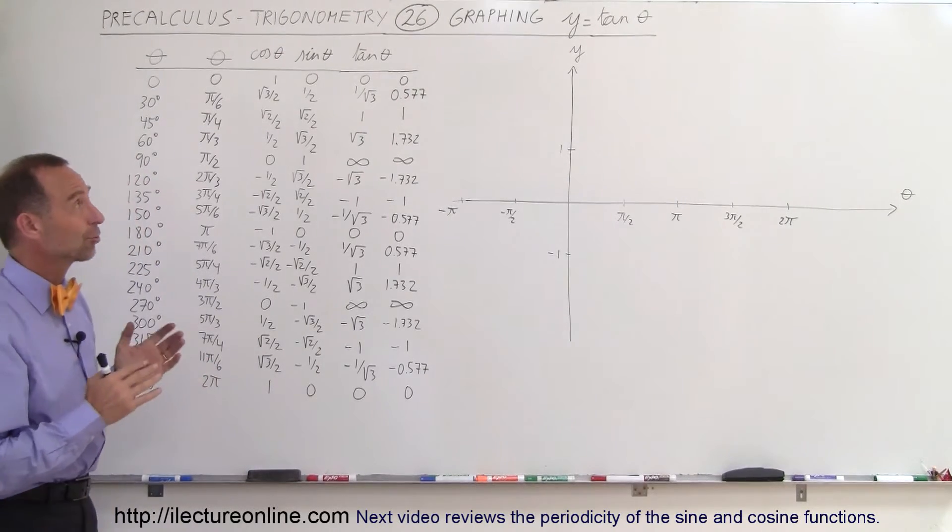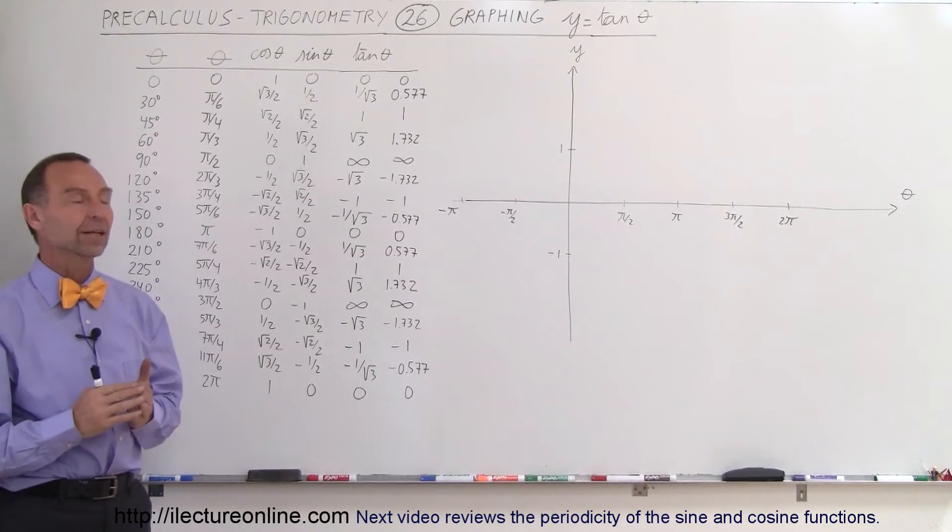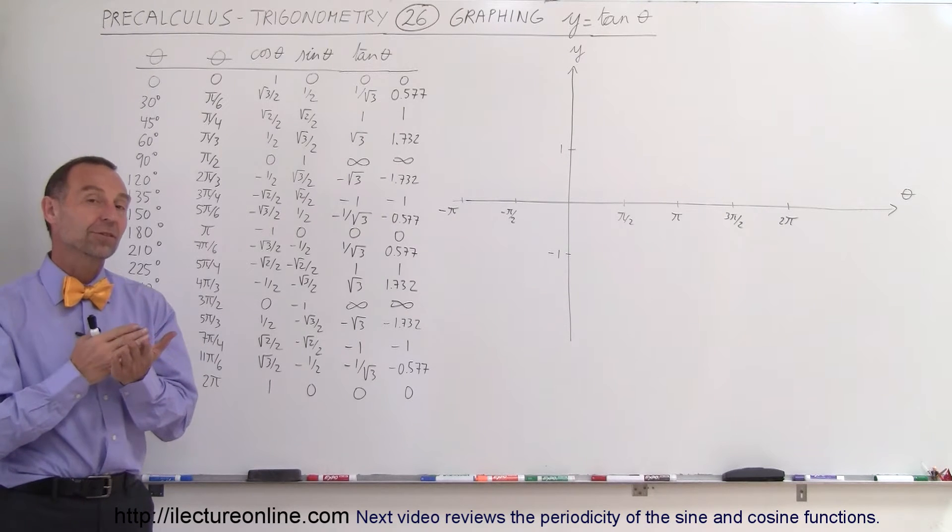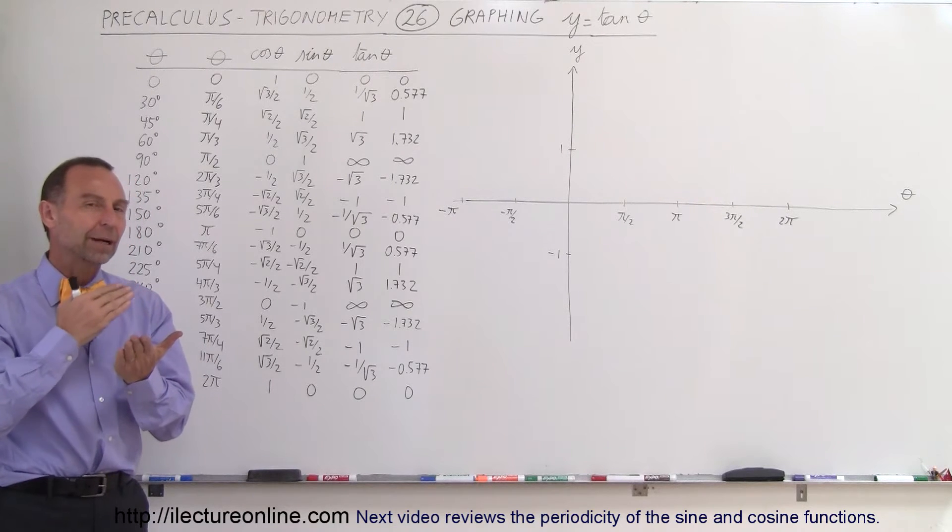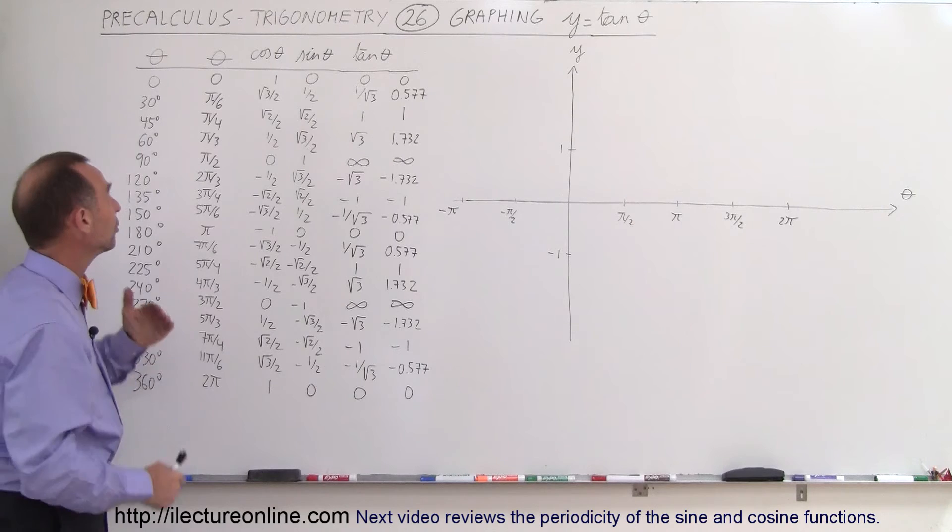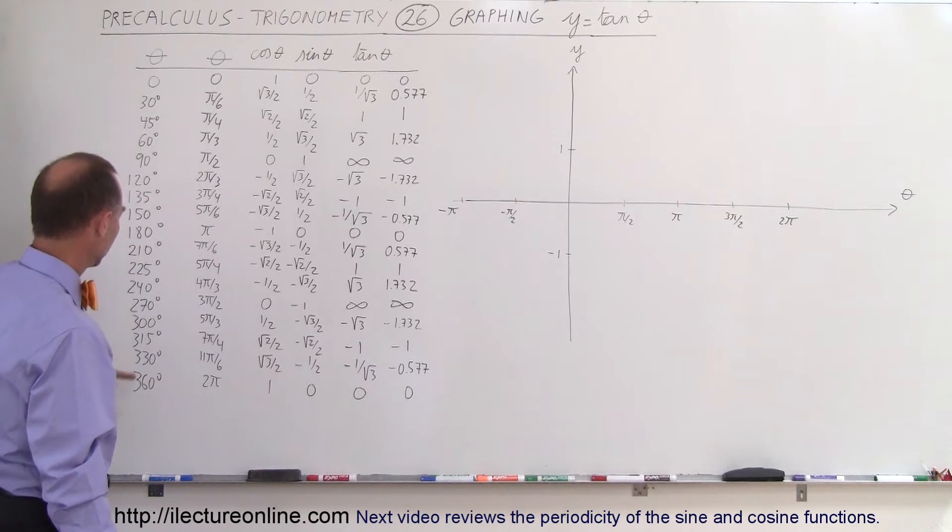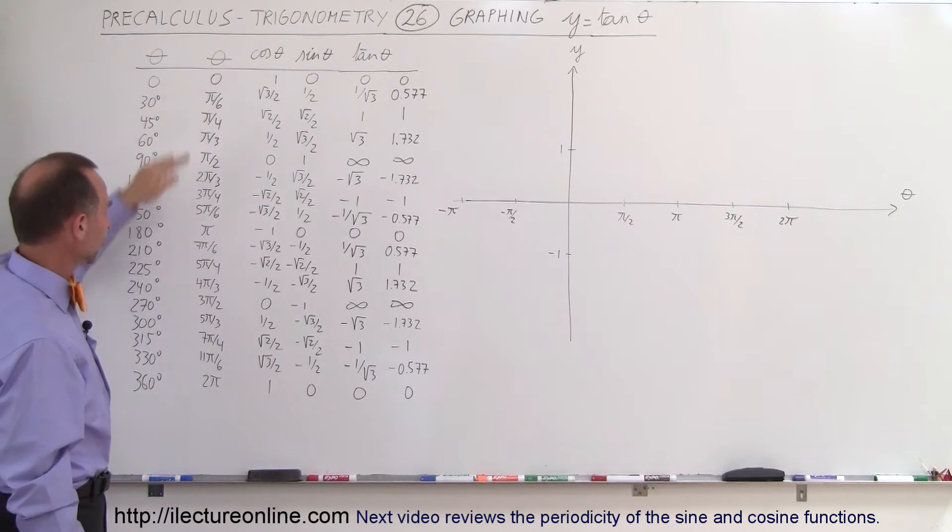Welcome to our lecture online and now we're going to try and graph the tangent of theta. Now remember the tangent of theta is defined by the sine of theta divided by the cosine of theta. So what we need to do is account for the various angles from 0 to 360 degrees or from 0 to 2 pi.